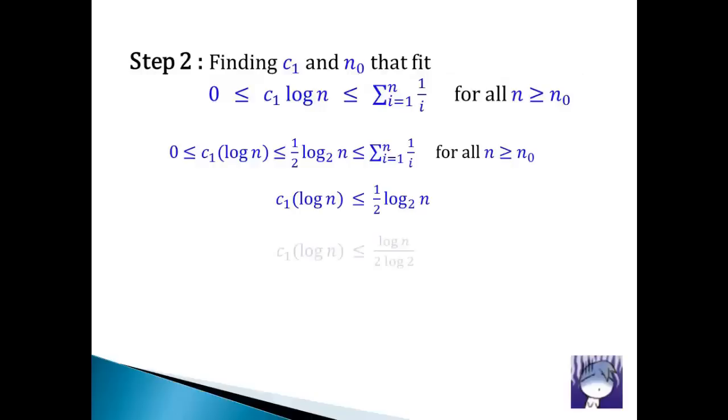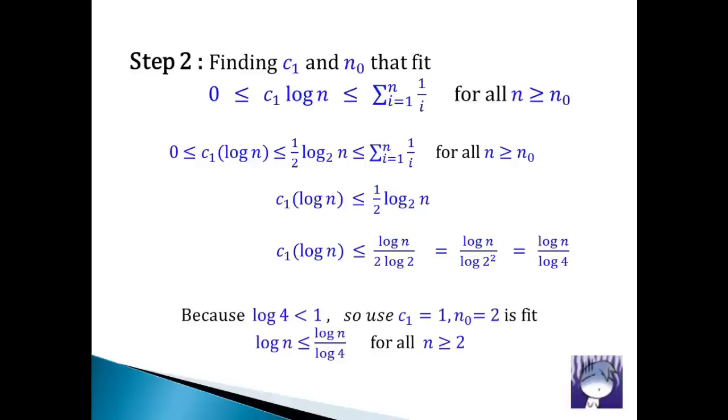We start by changing the base of floor log n. Apply power rule. Calculate value. Very easy to find c1 and n0. We choose 1 for c1 and the same n0 from step 1. Now we have already shown that log n is lower bound of the sum of the first n terms of harmonic series.